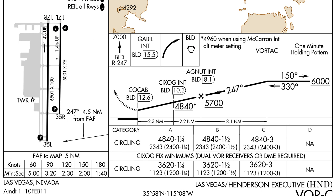If the approach procedure includes a procedure turn or hold in lieu of procedure turn, the outbound heading will be specified on top of the approach line with an arrow pointing outbound — in this case 1-5-0 — and the inbound course of the approach will be depicted below the approach line, in this case 3-3-0, with an arrow inbound.